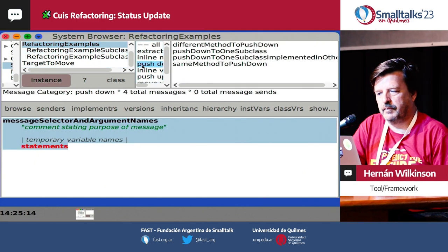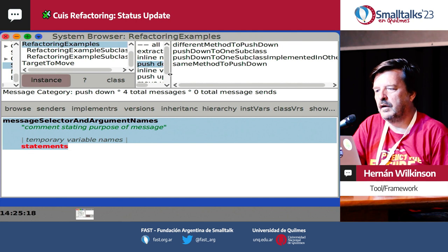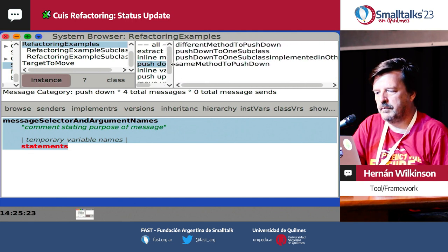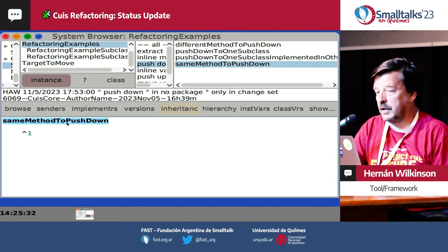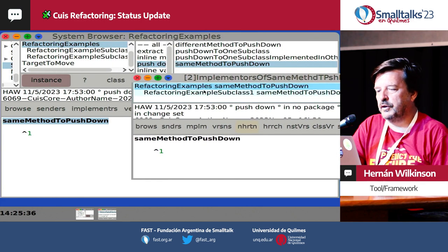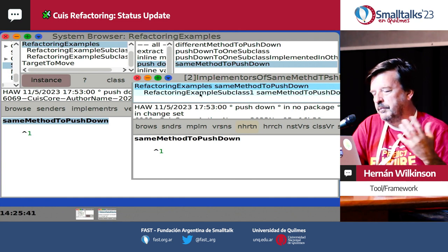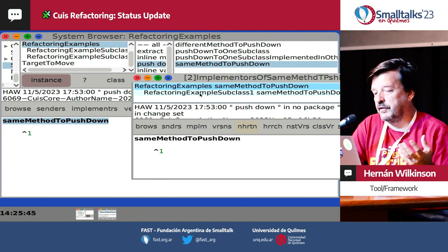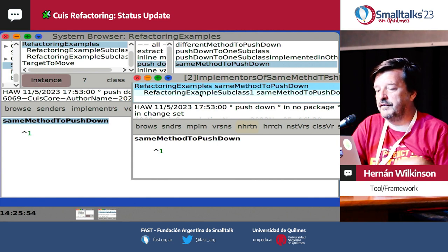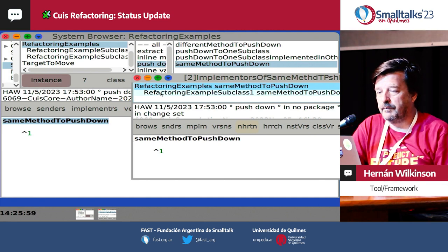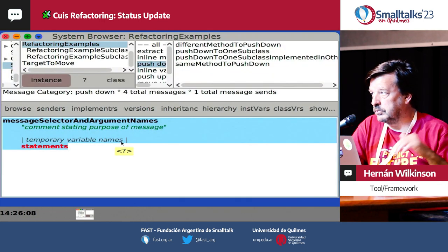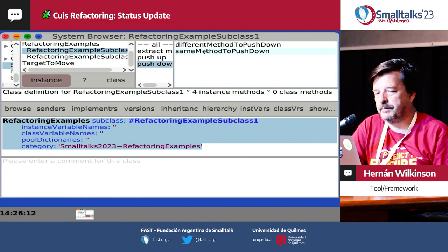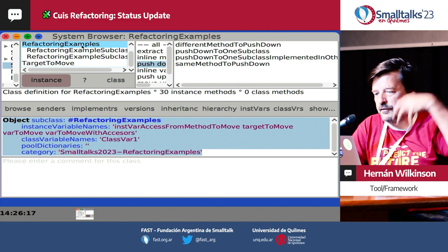One of the things we improved in push down: let's say we have this method implemented in one of the subclasses. Before, you couldn't do the refactoring because the message was already implemented in the subclasses. But now it looks for the implementation in the subclasses, and if the implementation is the same, it will allow you to do the push down. So if I do a push down of this method it will work, and we'll have it here and here. It doesn't stop you from doing the push down.